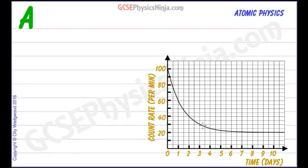So why did the count rate stop falling? Well, after 8 days the radioactive isotope has almost completely decayed. And all that the detector is picking up is the background radiation count, which appears to be 20 counts per minute.